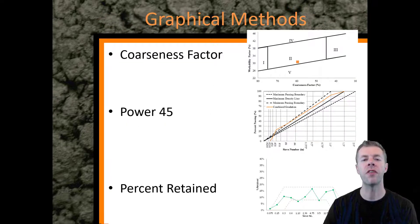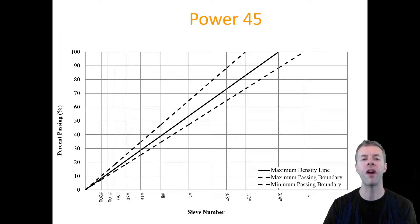The graphical methods, the three ones that we're going to be talking about today: the coarseness factor, also known as the Shillstone chart, the Power 45, and then also the percent retained. Let's start with the Power 45.